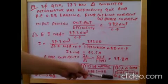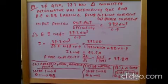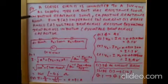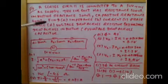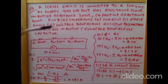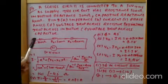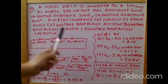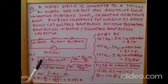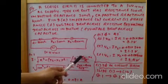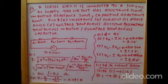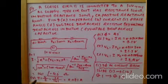A series RLC circuit is connected to a 100 V supply. The circuit has resistance 100 Ω, inductive reactance 300 Ω, and capacitive reactance 400 Ω. Find the impedance, phase angle, and voltage drops across resistor, inductor, and capacitor. Impedance Z = √(R² + (XL − XC)²) = √(100² + (300 − 400)²). Phase angle θ = tan⁻¹((XL − XC) / R) = tan⁻¹(−100/100) = −45°.